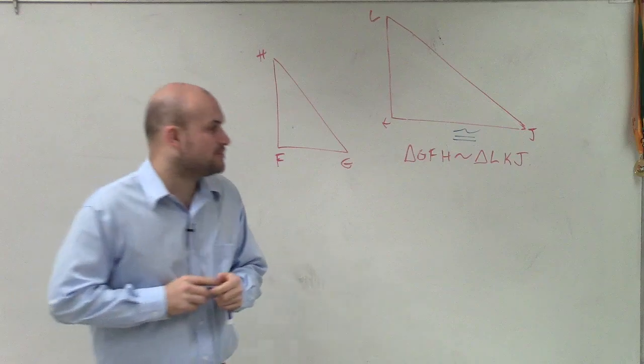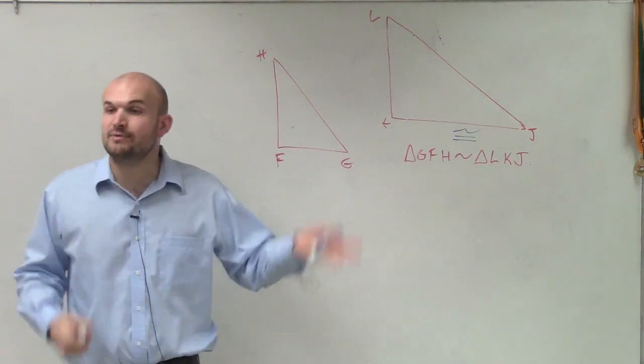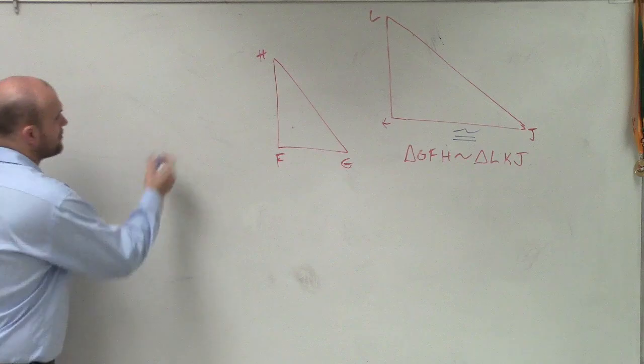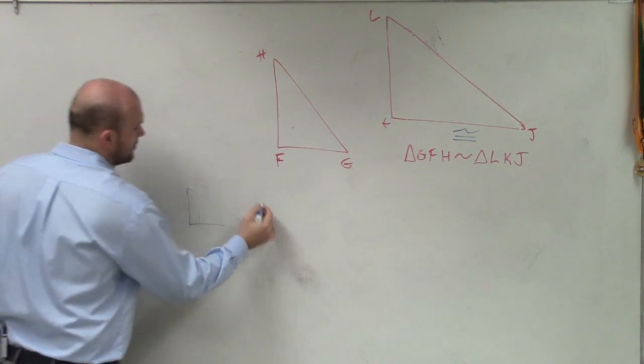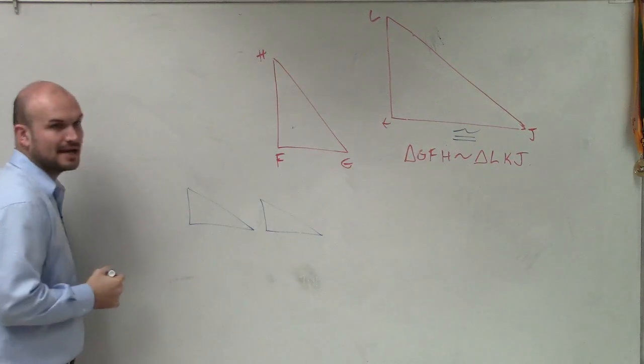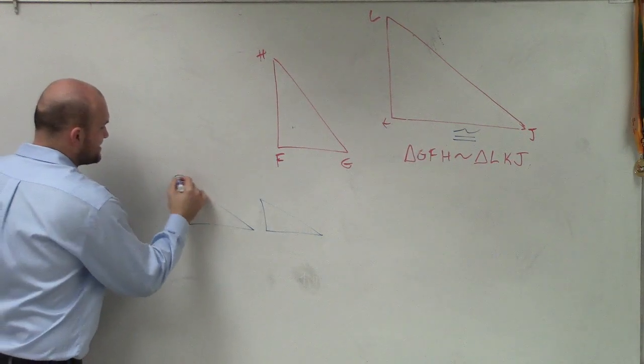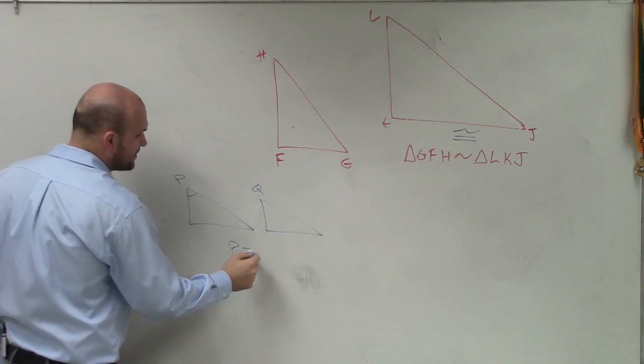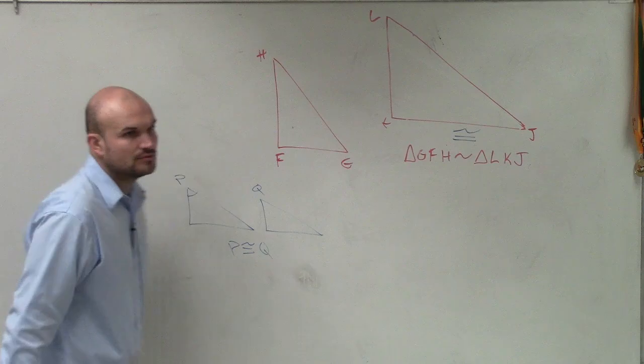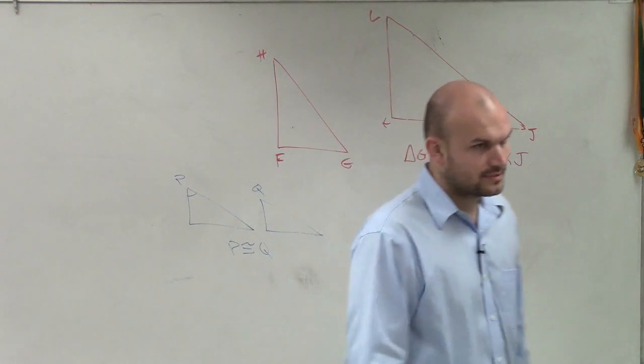However, what we want to do is talk about corresponding parts, kind of like we did with congruency. When we had two shapes that were congruent, for instance, these two shapes are exactly the same. If I said this angle P and that was angle Q, I could also say that angle P was congruent to angle Q.